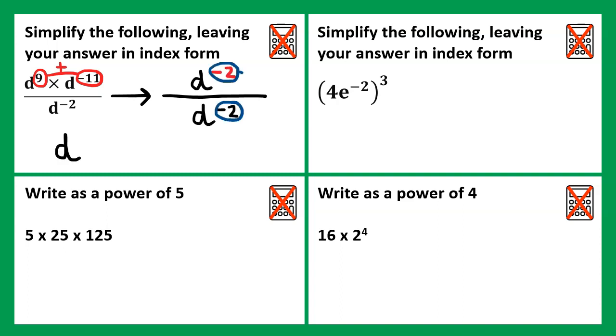Then we have a base of d, and we're doing negative 2 subtract negative 2. When subtracting a negative, this would be the same as adding. So negative 2 plus 2 will give us 0, and we're in the same position as earlier, where something to the power of 0 would be 1.